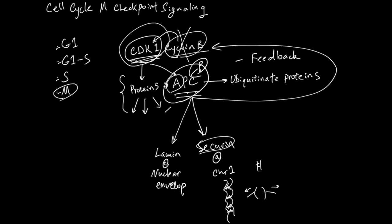And finally, the amount of APC in a cell is fairly constant. So CDK phosphorylation is what controls the APC activity, not the expression.